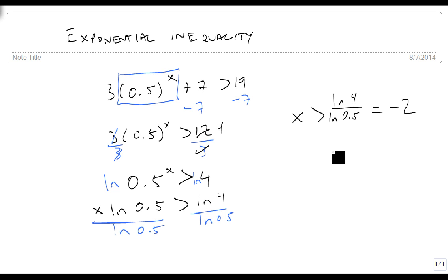That's how we find an exponential inequality. Isolate the exponential first, take the natural log of both sides, solve for the variable, and then get a decimal equivalent.